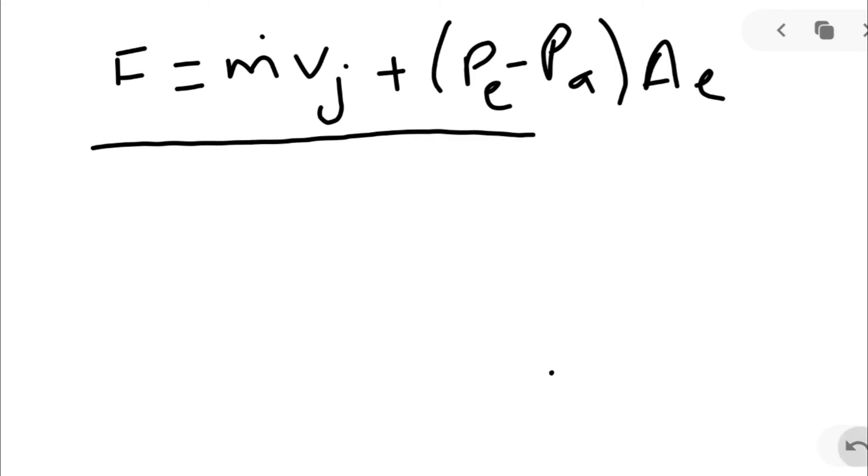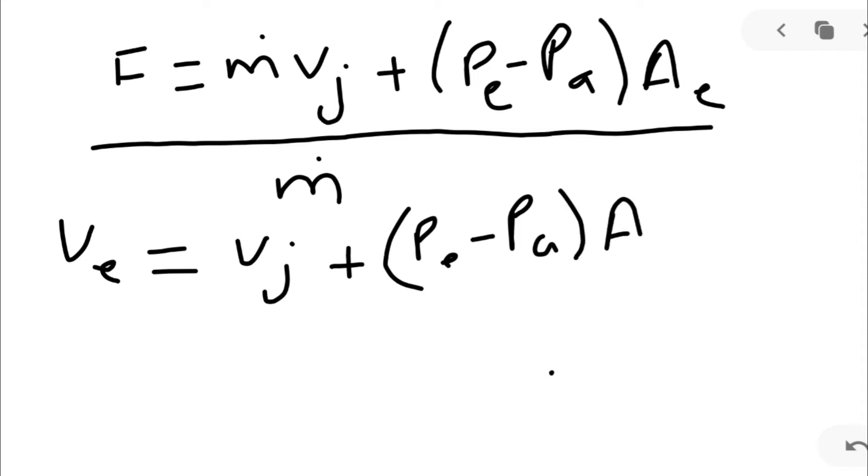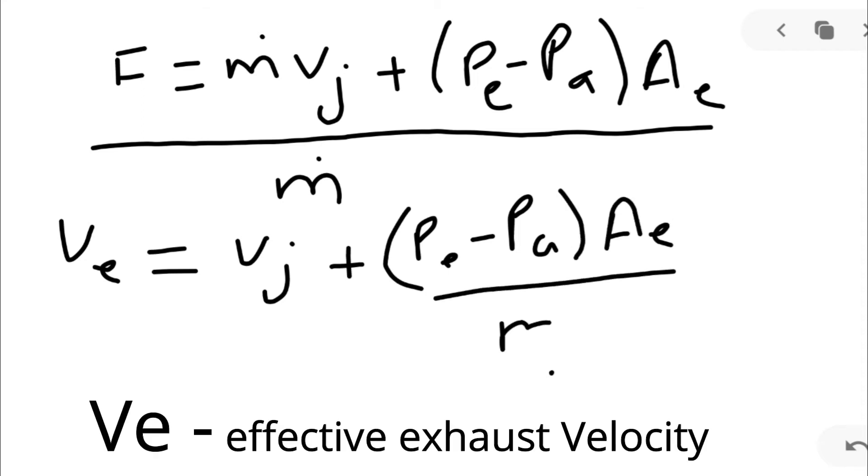If we divide this equation by m dot mass flow rate, we will get effective velocity. Ve is equal to nozzle jet velocity plus Pe minus Pa into Ae divided by m dot. This is effective velocity.